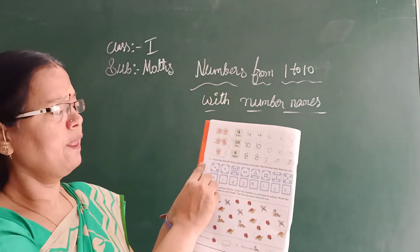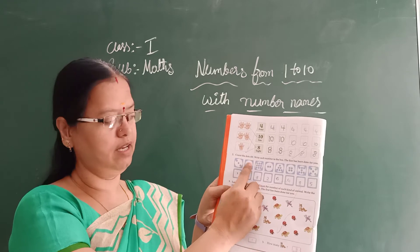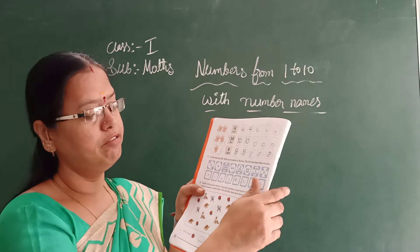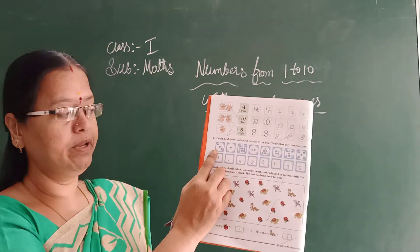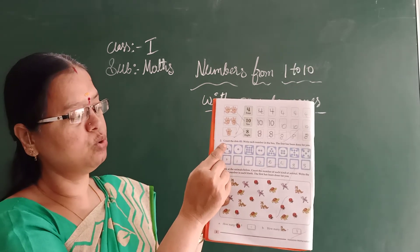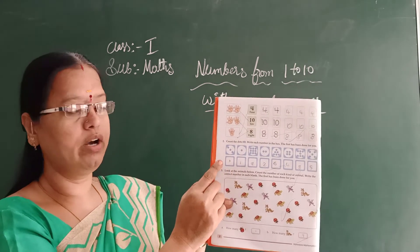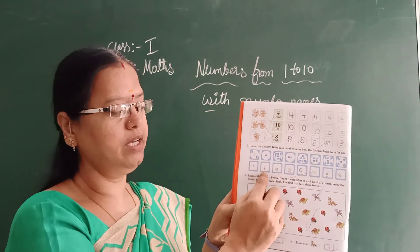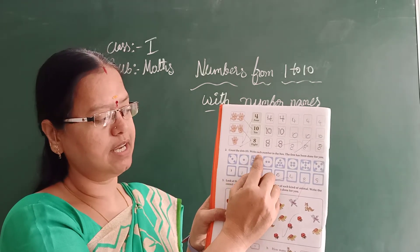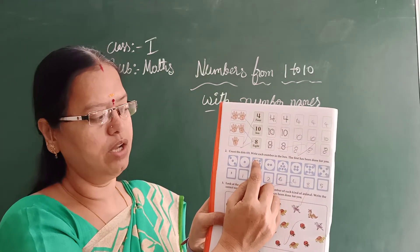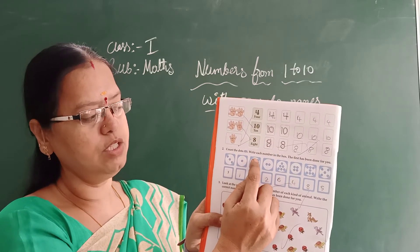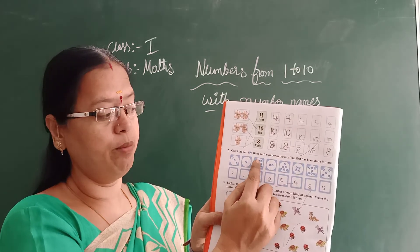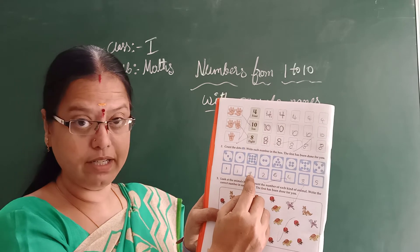Now come to the next activity. Here there are dots in boxes — count the dots and write each number in the box. The first one has been done for you. See the first box — how many dots are there? 1, 2, 3 — so you write 3. Now the second one — how many dots? 1 — write 1 in the box. And here — 1, 2, 3, 4, 5, 6, 7, 8, 9 — write that number neatly in the box.